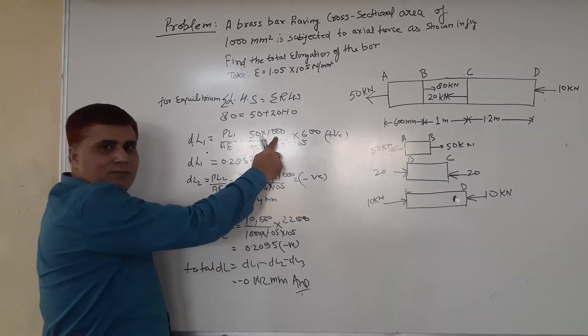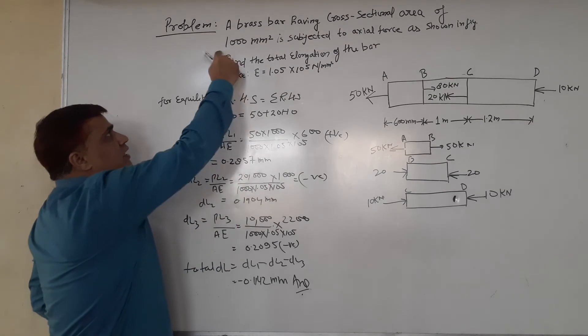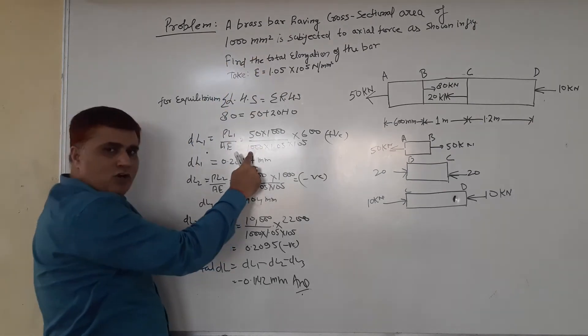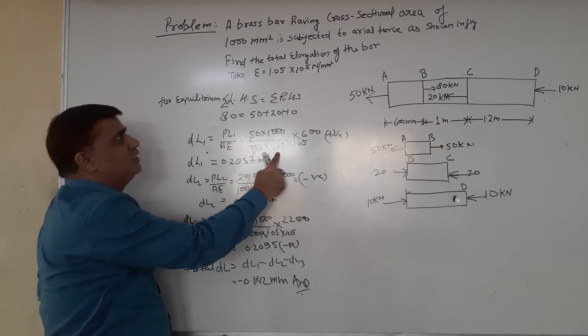We multiply by 1000, then divide by the area, which is 1000 mm². Multiply by the modulus of elasticity, E = 1.05 × 10⁵ N/mm².